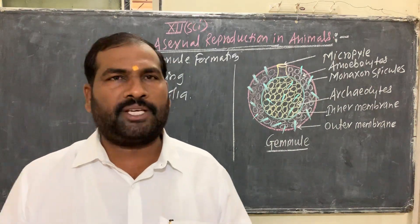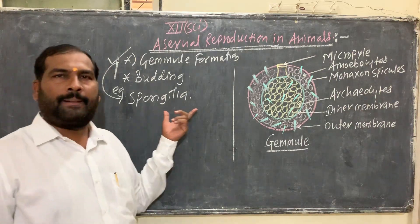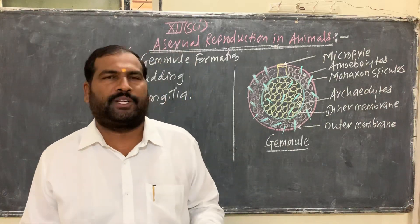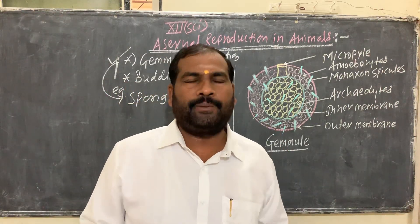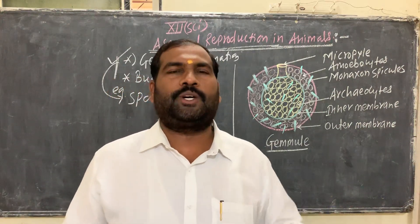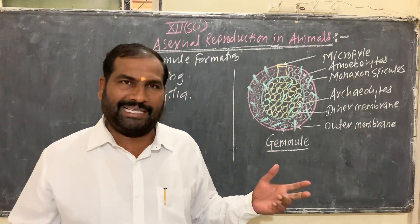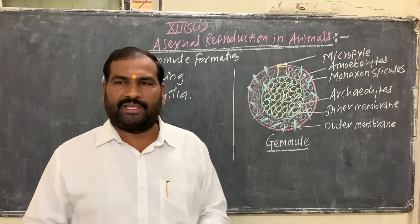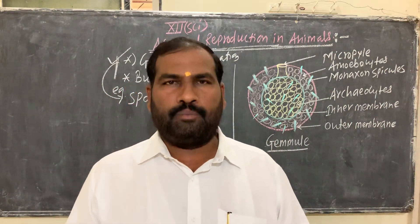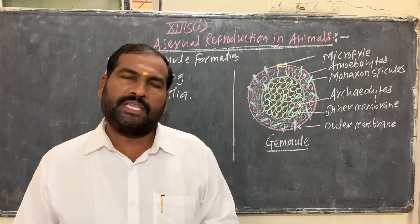That structure is called a gemmule, and it is formed during the unfavorable condition by the sponges. The example is Spongilla — in Spongilla, during the unfavorable condition, a mass of cells is formed surrounded by a thick membrane. When there is an occurrence of favorable conditions, the membrane gets ruptured and the cells are released, and a new individual is developed. So that is gemmule formation in Spongilla.